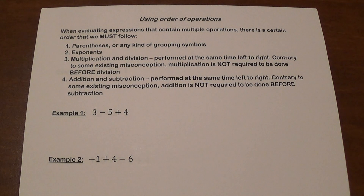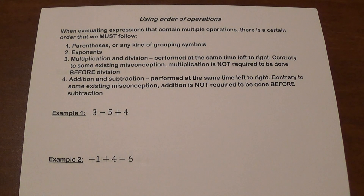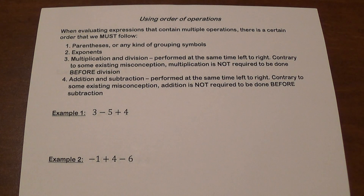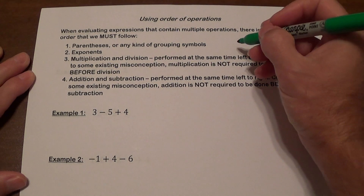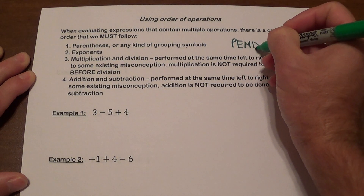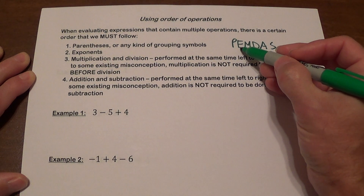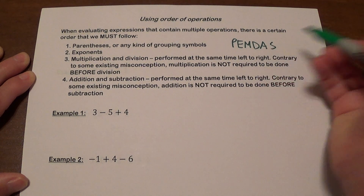The second thing we do is exponents. Then we do multiplication and division — they are done at the same time, left to right. There is a misconception that multiplication must come before division, but that is not true. The same goes for addition and subtraction — you can do them at the same time, left to right. This is known as PEMDAS: parentheses, exponents, multiplication, division, addition, subtraction.